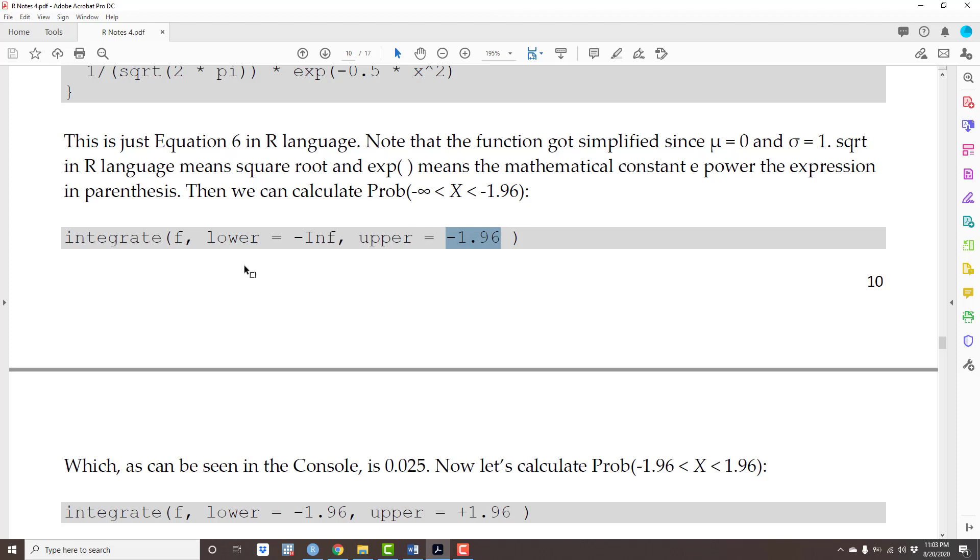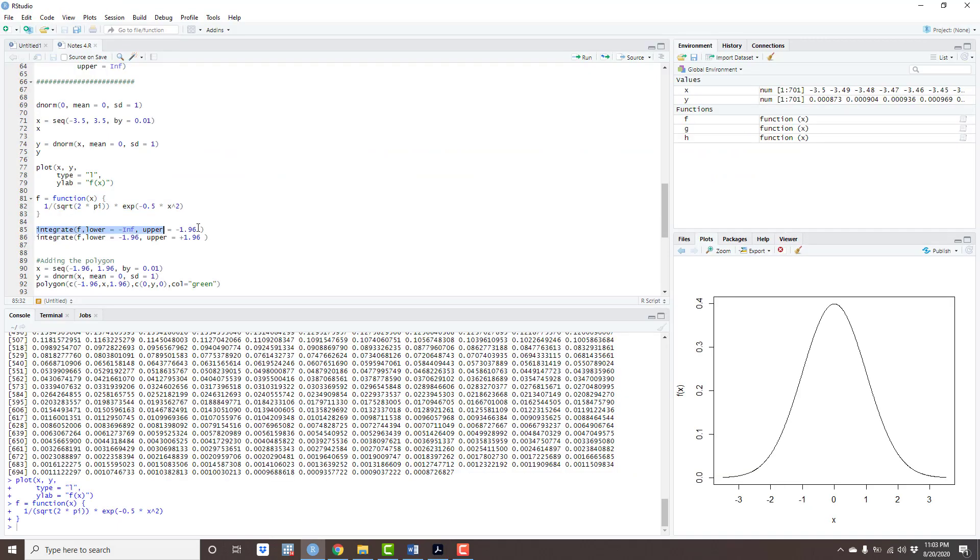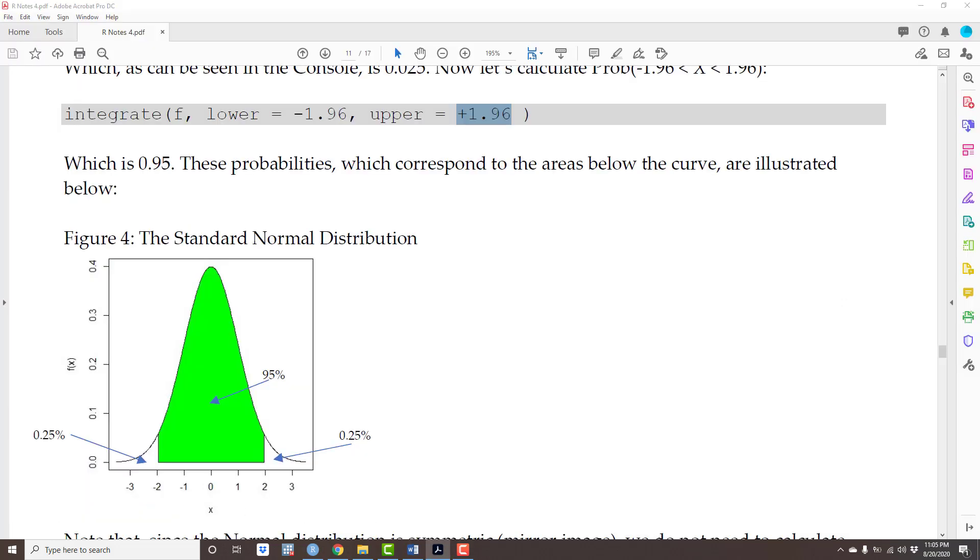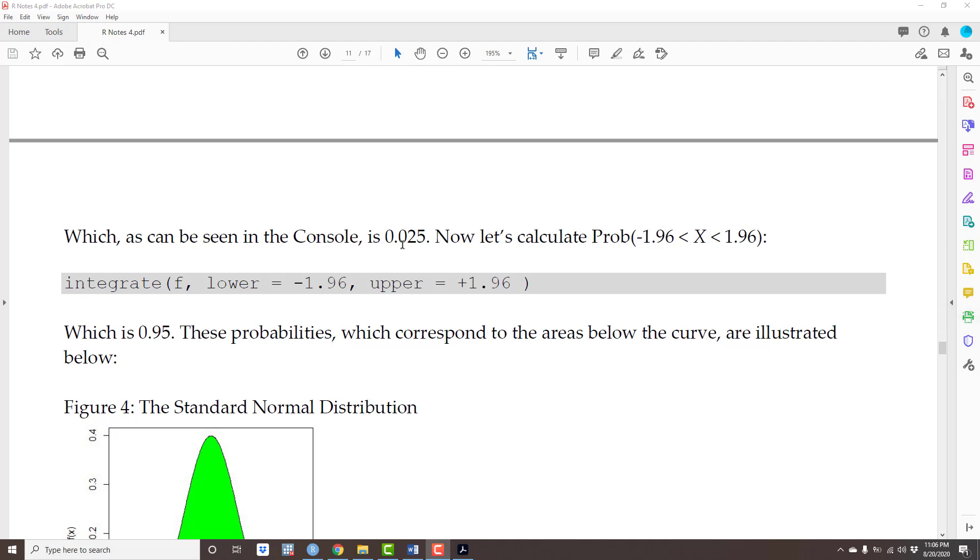So basically instead of rolling a die, you are actually drawing an x from a population that is normally distributed, and you're going to look at this x. What's the probability that this x is between minus infinity and -1.96? This probability is 0.025 or 2.5 percent.